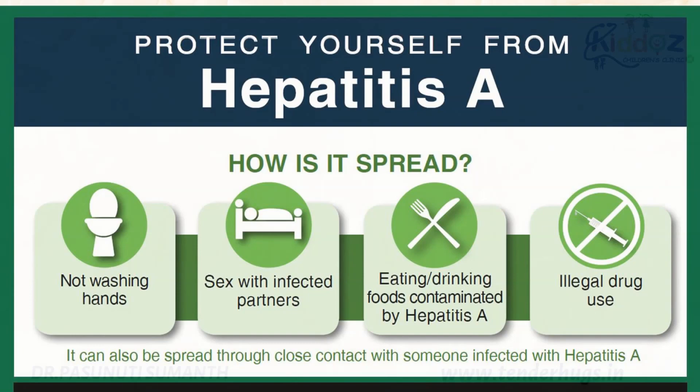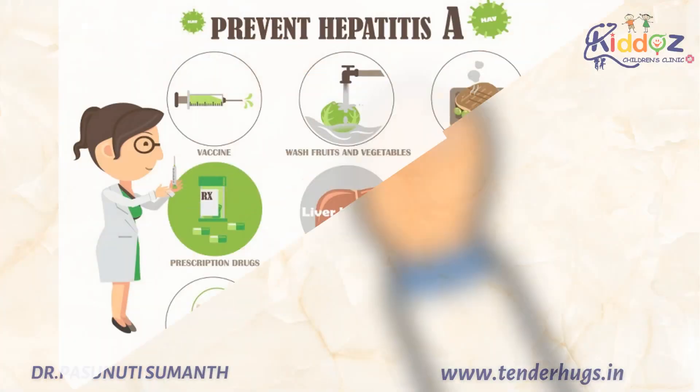Now we'll see how does hepatitis A spread? By not washing hands, and sex with infected partners, eating or drinking foods contaminated by hepatitis A, and illegal drug abuse. It can also spread through close contact with someone infected with hepatitis A.